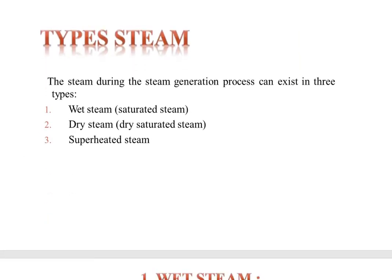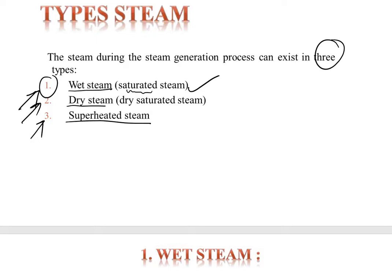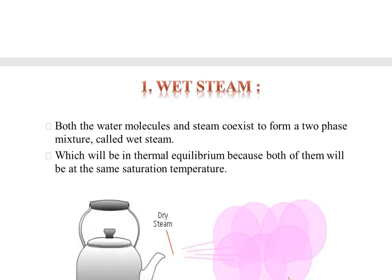Types of steam. There are three types of steam: wet steam, dry saturated steam, and superheated steam.